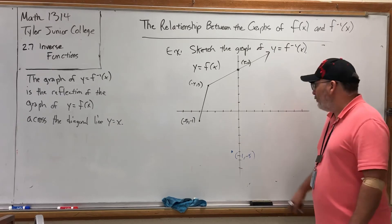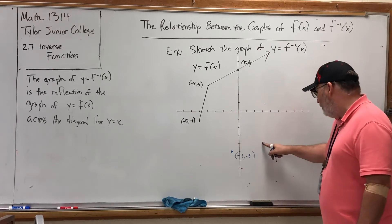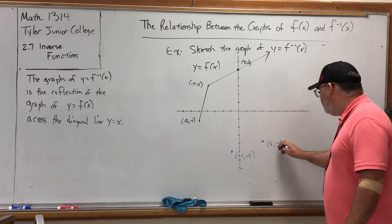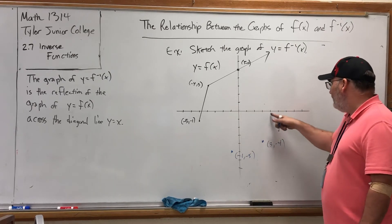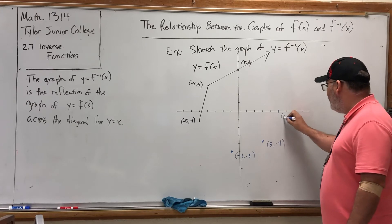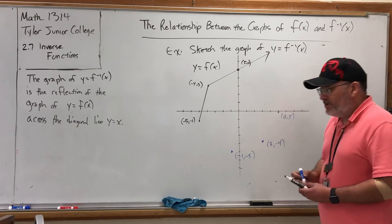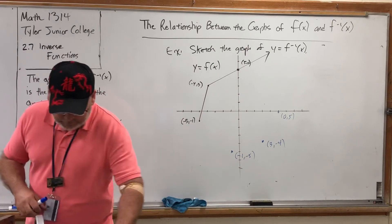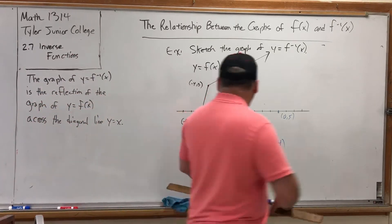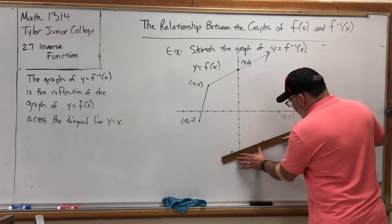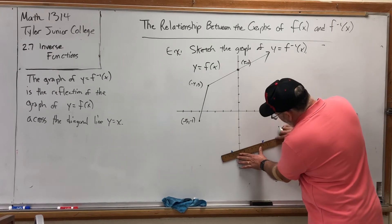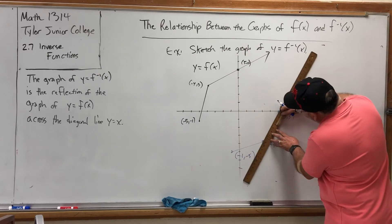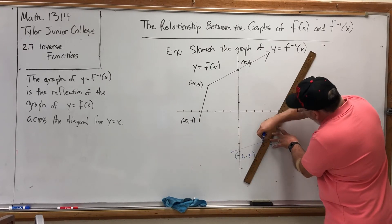So right about here, that's (-1,-5). Instead of (-4,3), we would want (3,-4), so right about here. And instead of (5,0), we would want (0,5), so right about here. And then just reconnect them in the same order. So it looks something like this. Start at this point, connect it to that one, and then connect these two and send it on its merry way.